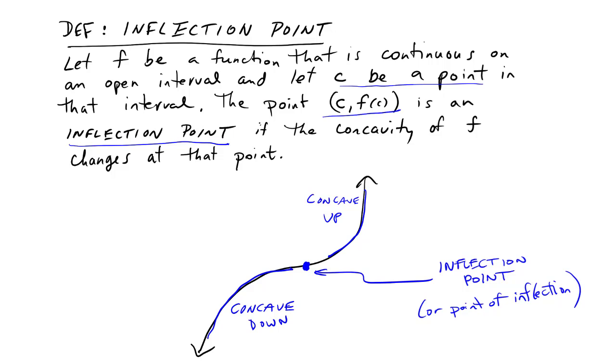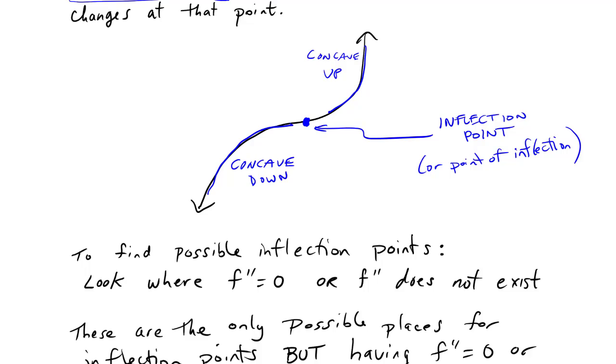The idea is these are important points because this is where the curve changes its shape in a particular way from being concave down to concave up and we want to identify these. So how do we find them?